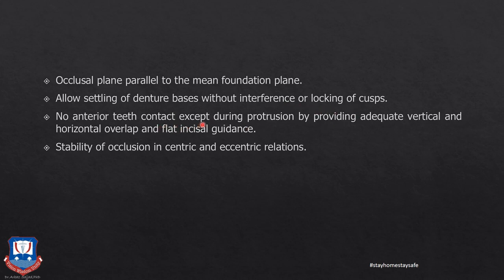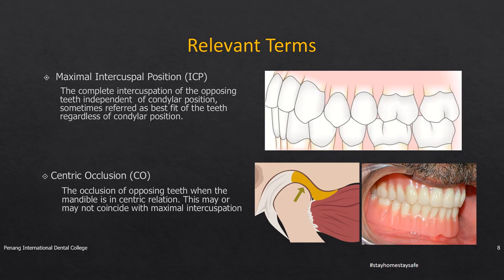Occlusal forces should be directed in a vertical direction towards the anterior-posterior center of the ridge. The occlusal plane should be parallel to the main foundation plane and allow setting of the denture bases without interference or locking of the cusps. There should be no anterior teeth contact except during protrusion or retraction. During maximum intercuspation or centric occlusion, the anterior teeth should have sufficient overjet to prevent contact between them. Stability of occlusion in centric and eccentric relationships can only be achieved if balanced occlusion is planned.